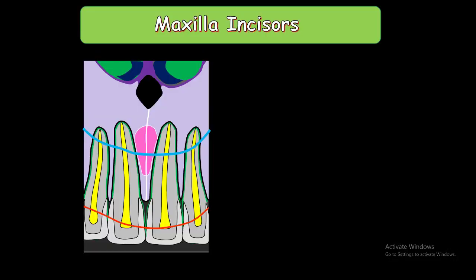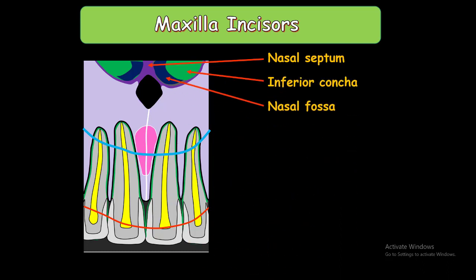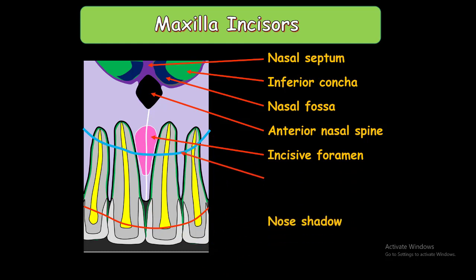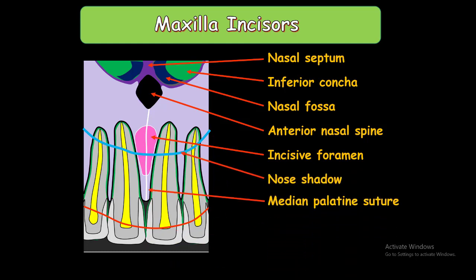The periapical radiograph of the maxillary incisors contains these parts: the nasal septum, the inferior concha, the nasal fossa, the anterior nasal spine, the incisive foramen, the nose shadow, the median palatine suture, and the lip shadow.